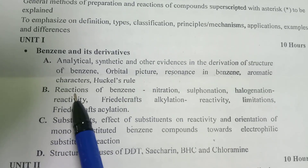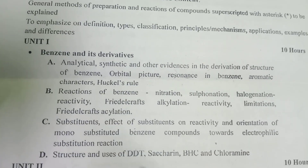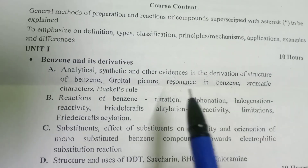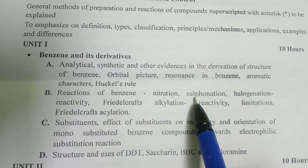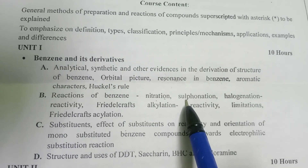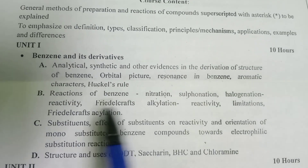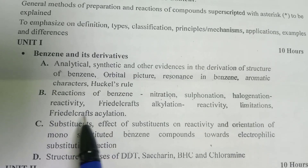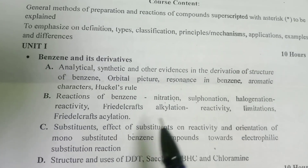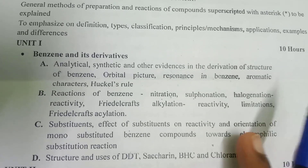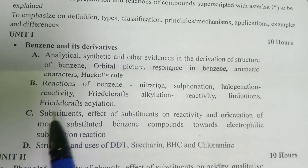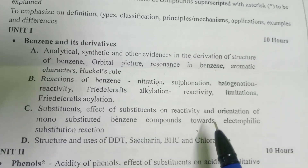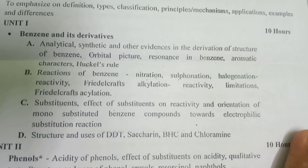The other topic is the reactions of benzene. How many reactions does benzene undergo? By nitration — this is a reaction of benzene with HNO₃. This is sulfonation reaction. Halogenation — reactions of benzene with halogens. Now the other reactions are monosubstitutions of benzene compounds towards electrophilic substitution reactions.